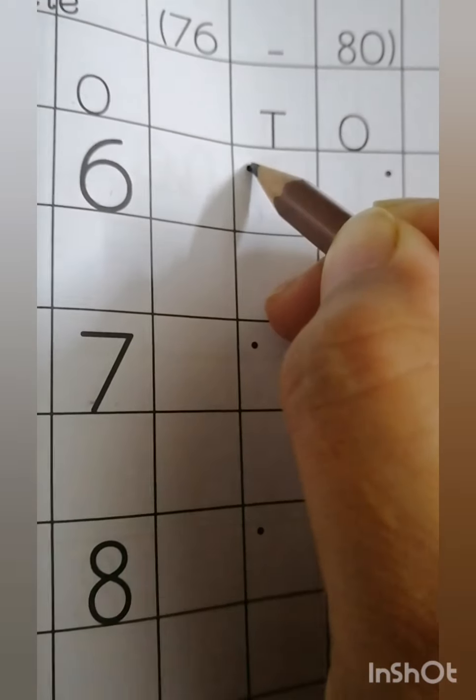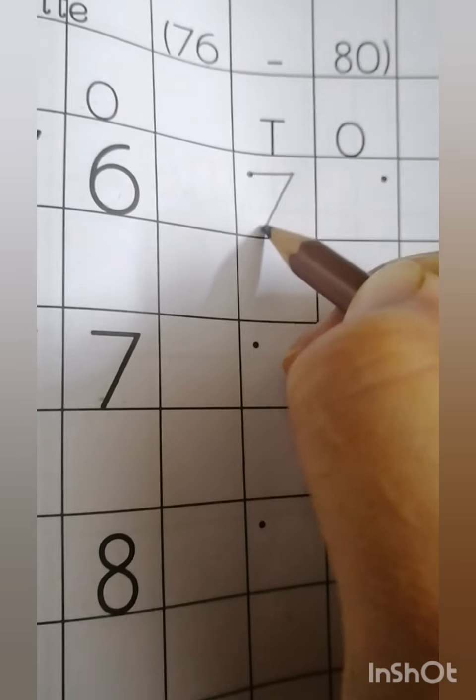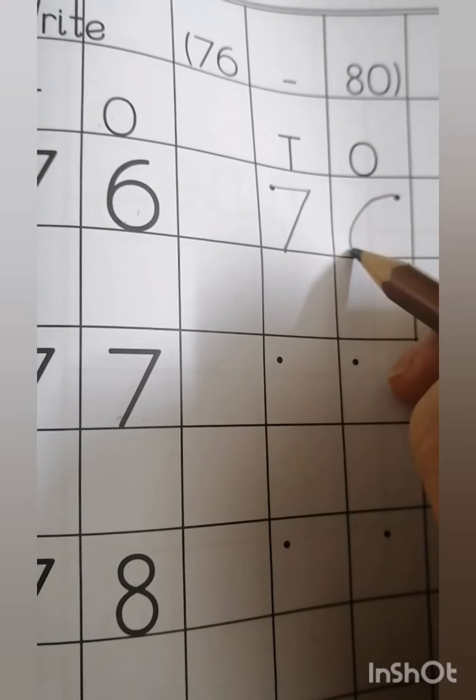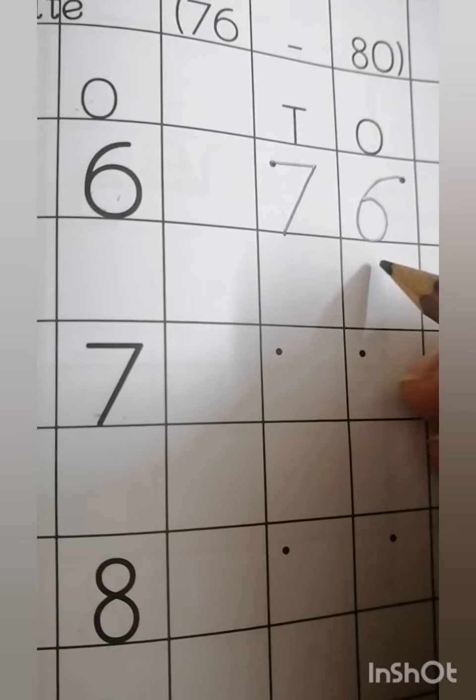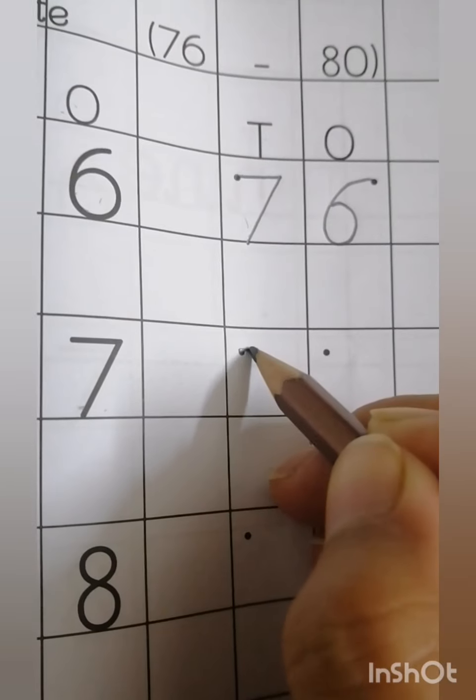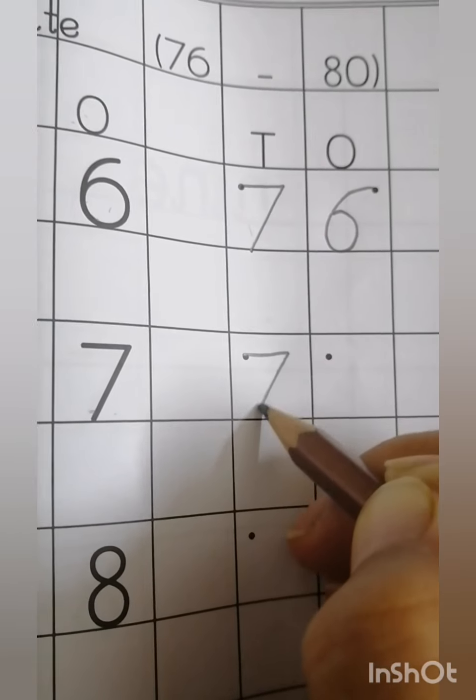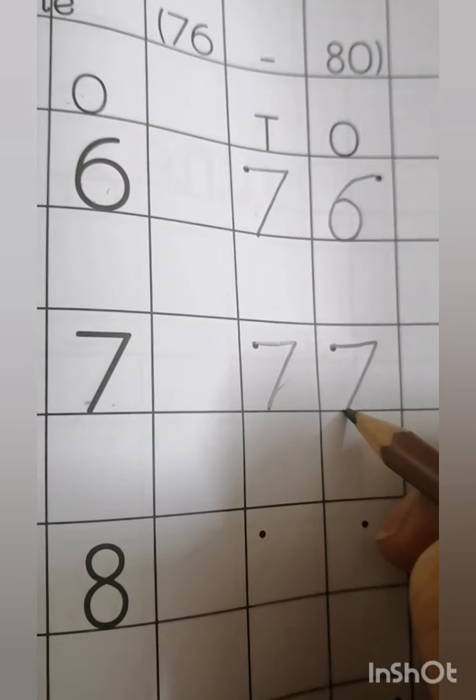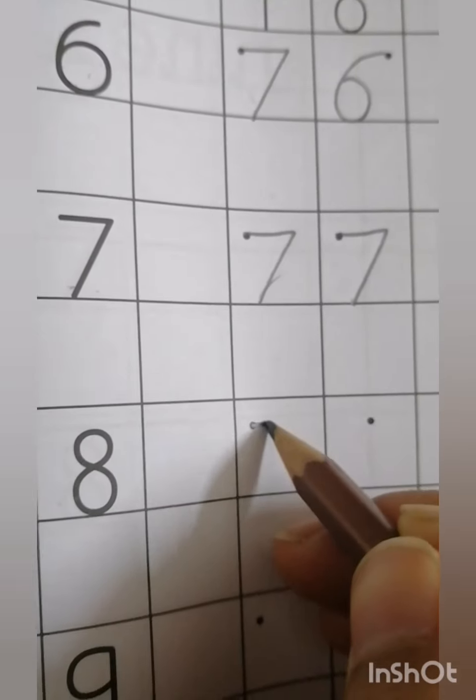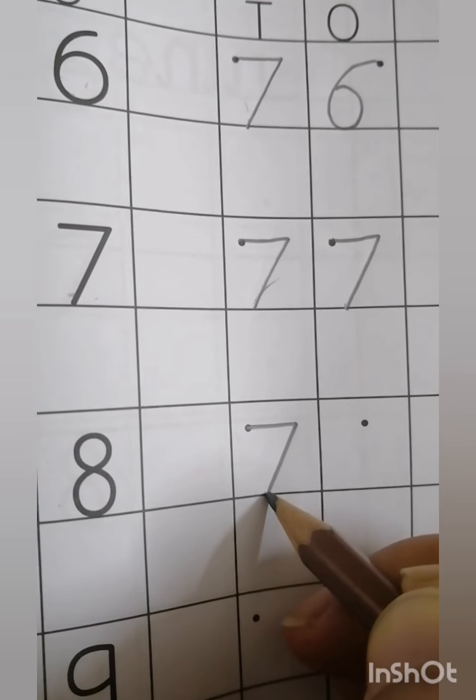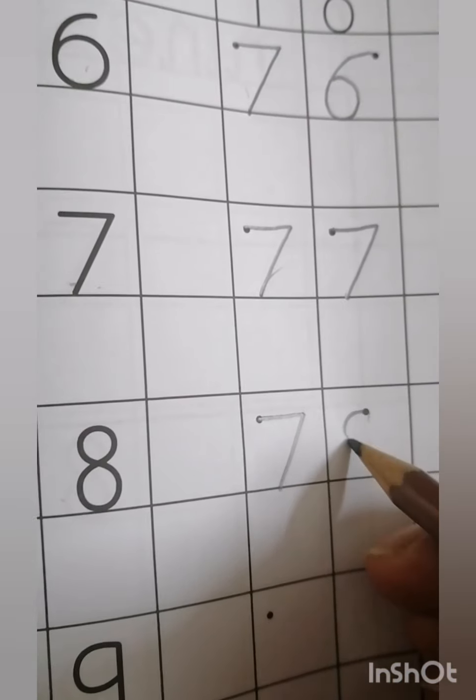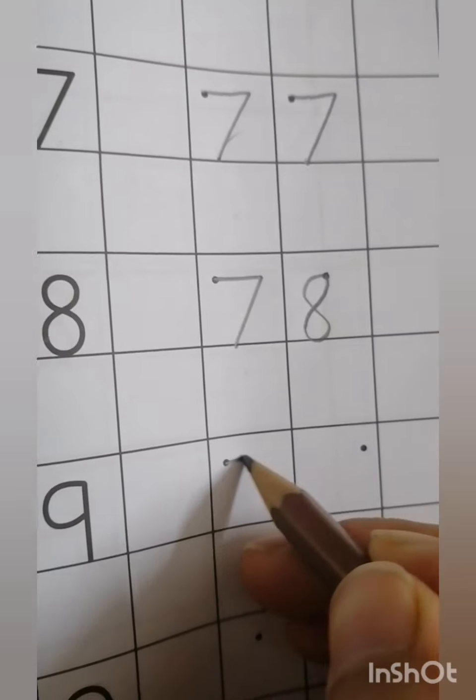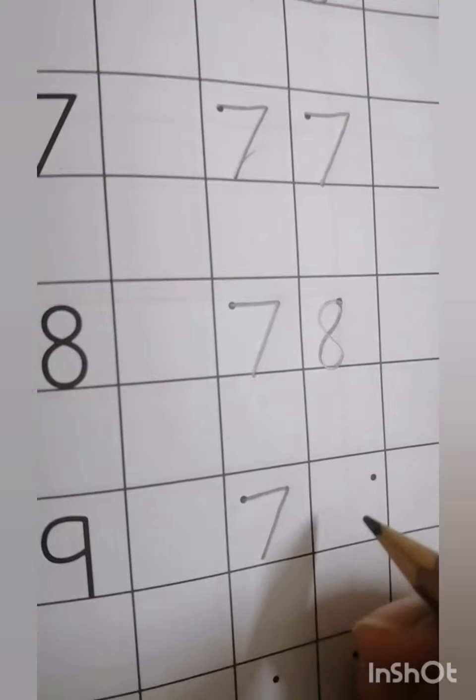Put your pencil on the dot, sleeping nine, then like this, 7. 7 and 6 makes 76. 7 and 8 makes 78. 7 and 8 makes 78.